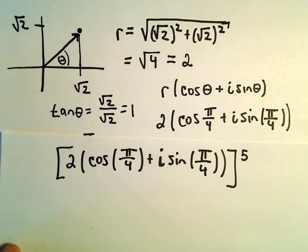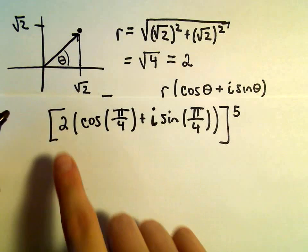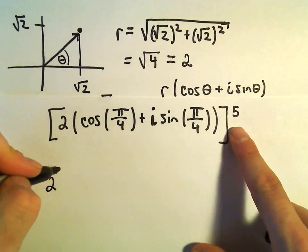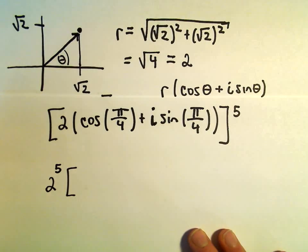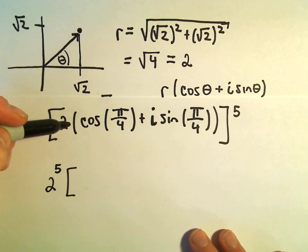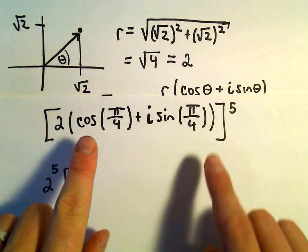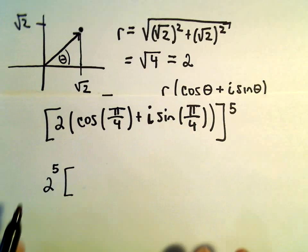And again, according to De Moivre's theorem that we've seen, all you do is you just take the r value and raise it to the exponent. So we'll get 2 to the fifth.